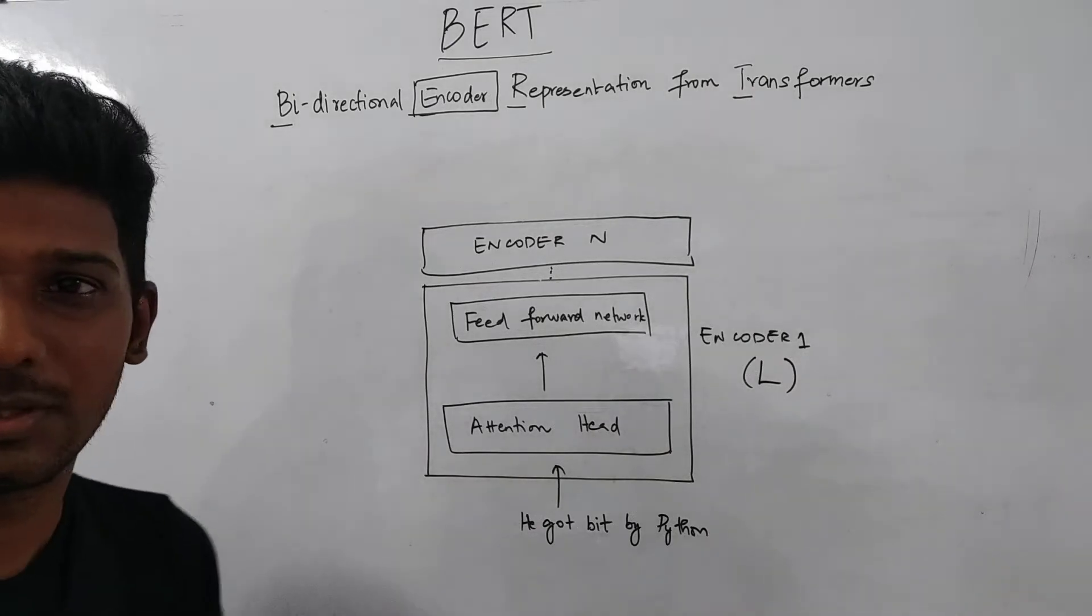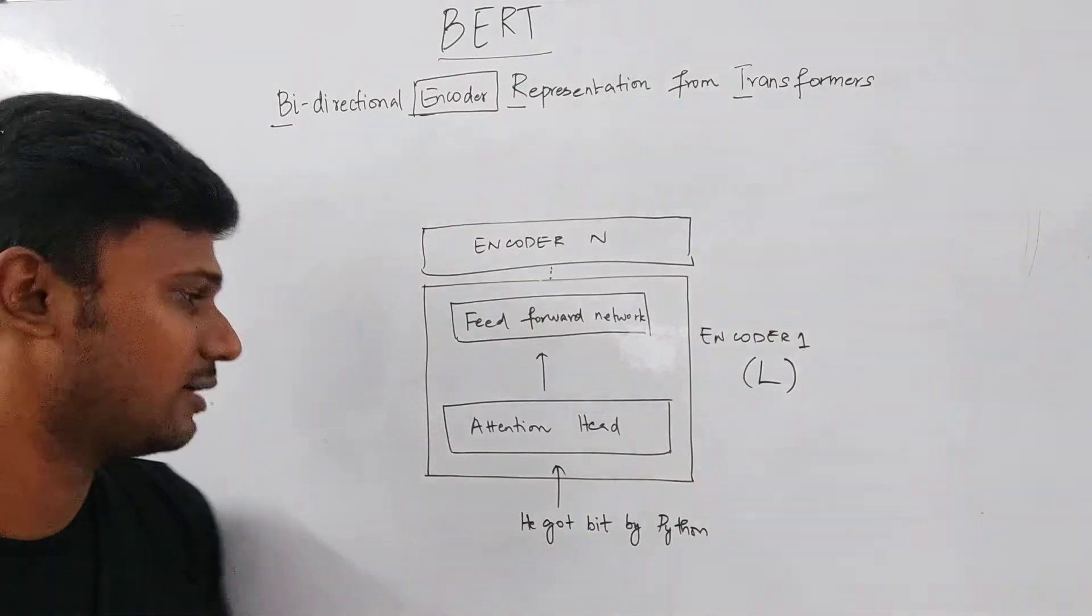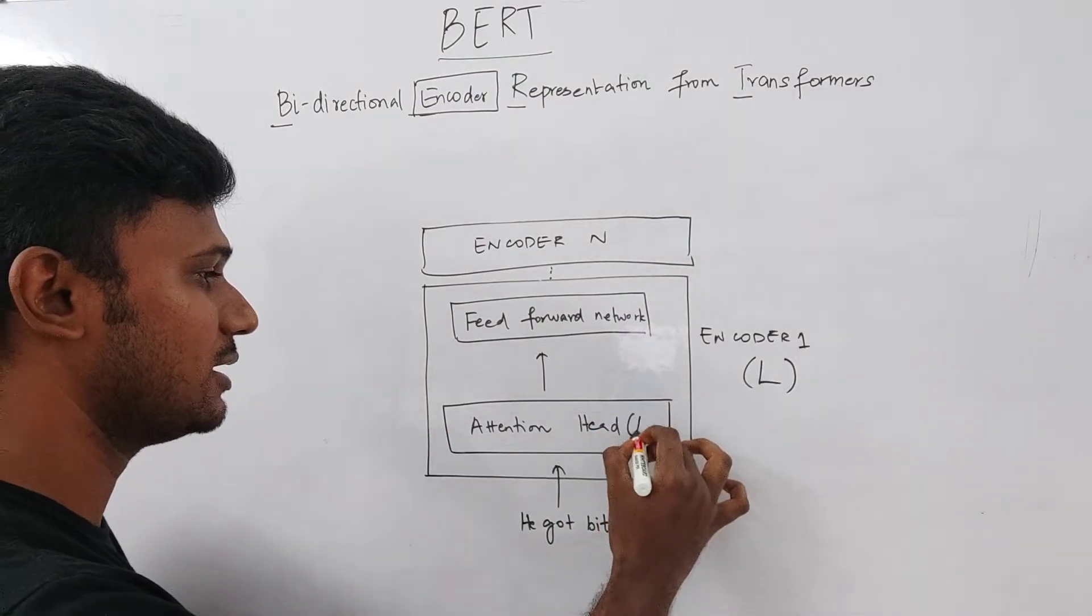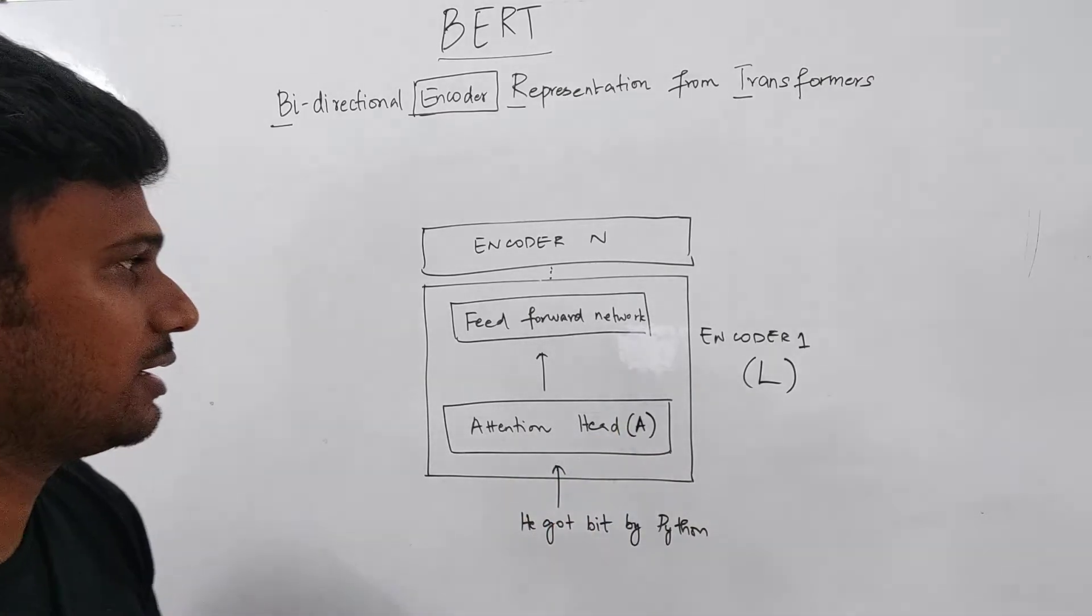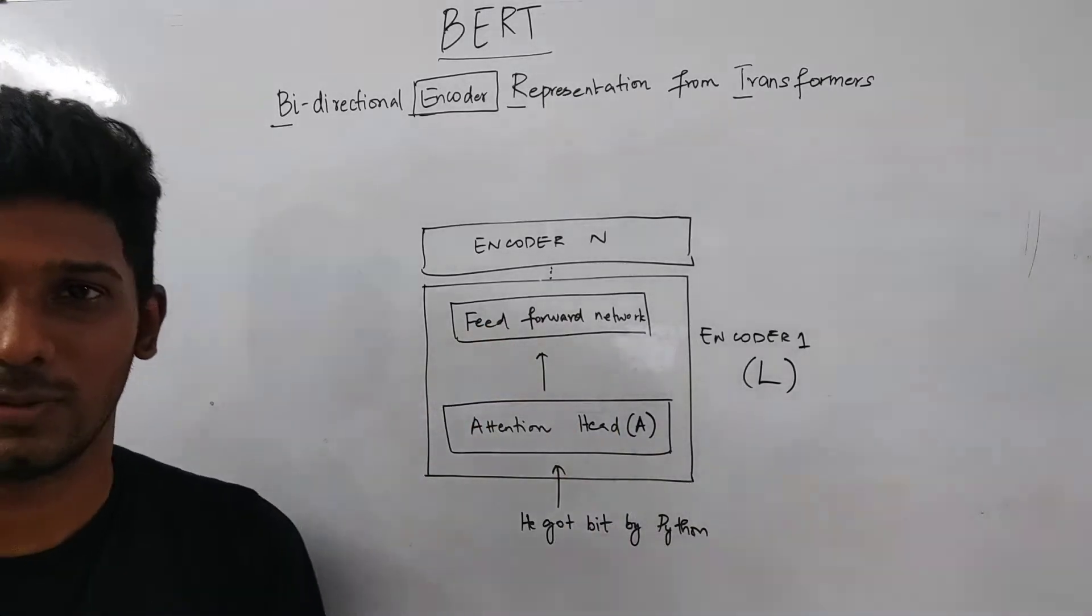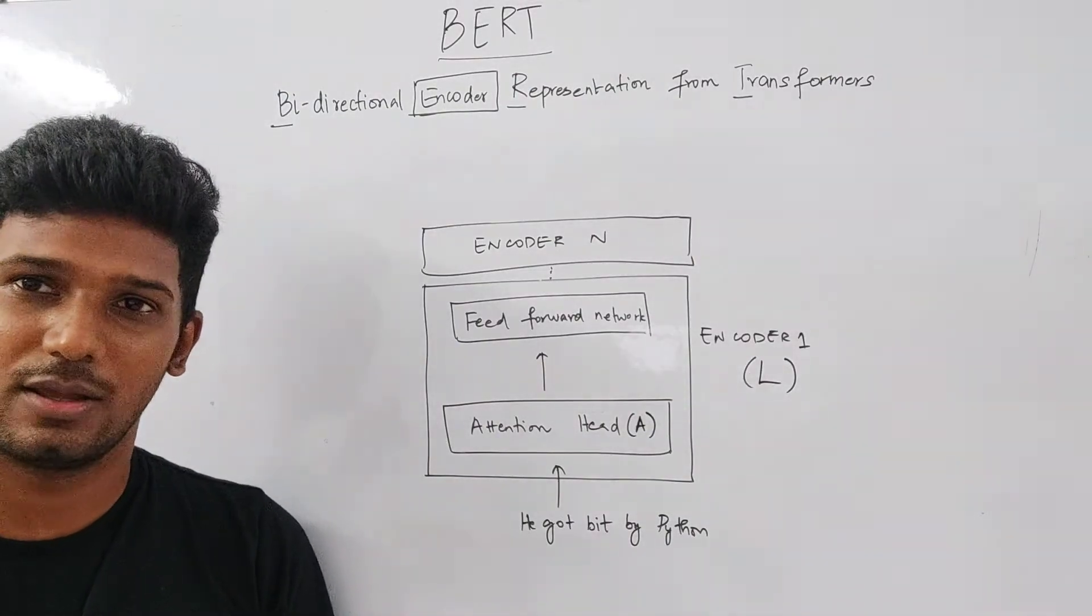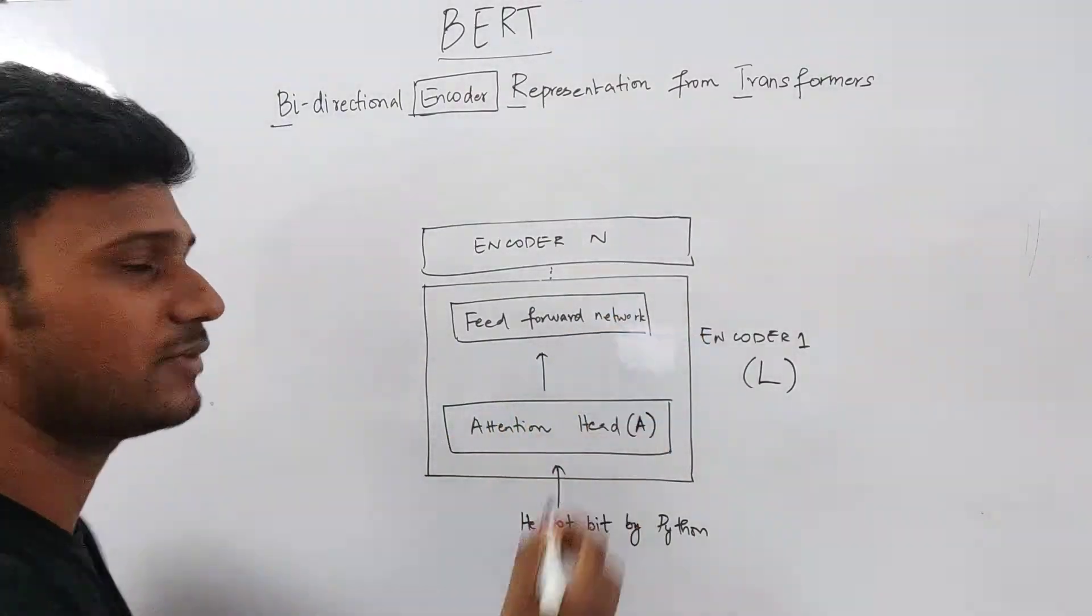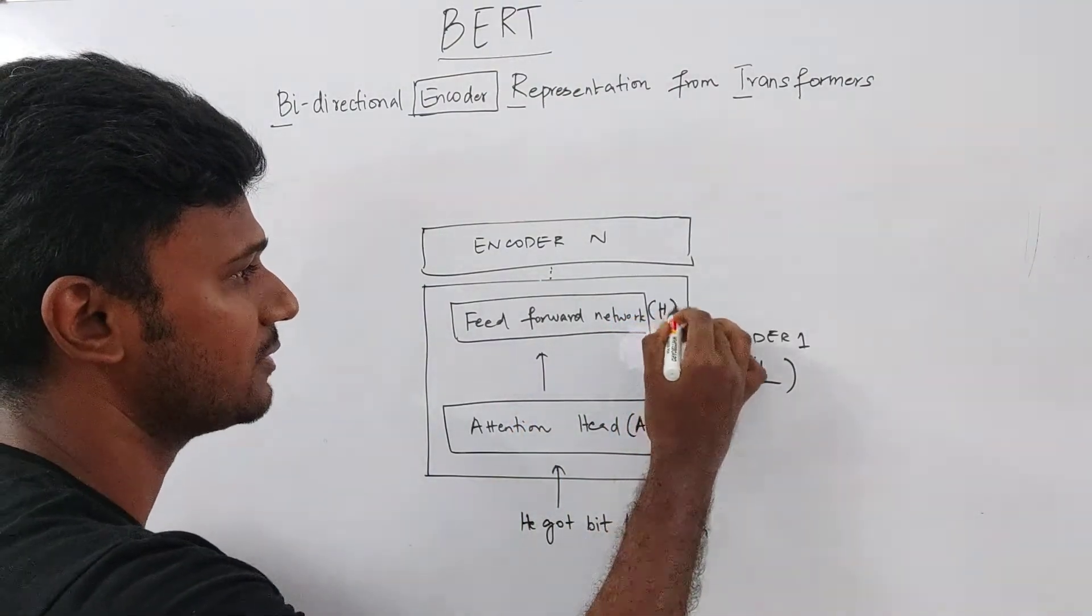So everything means the same. Basically, it tries to capture the relationship of a word with the other words in the same sentence. So this is basically represented with the letter A. And then we have the feed forward network. The feed forward network basically has a lot of hidden neurons and hidden layers, so because of that hidden, it is represented by the letter H, capital H.